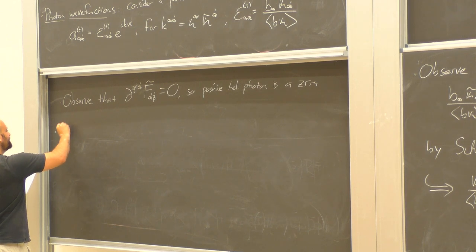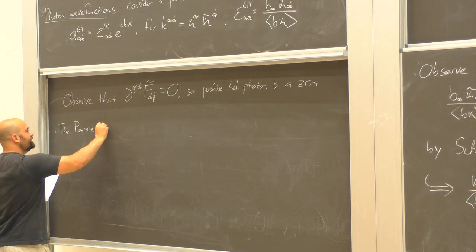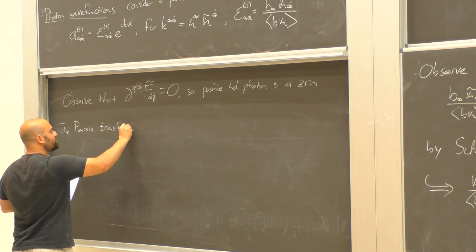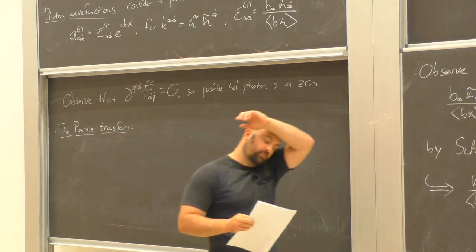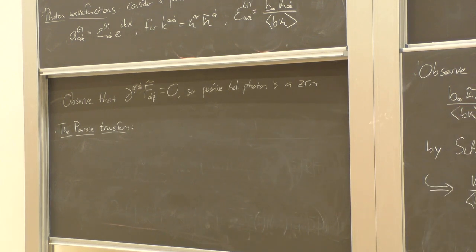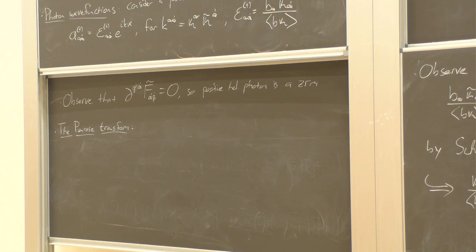Now onto the real money maker: the Penrose transform. To talk about what this is, we need to introduce some terminology. Let curly O(k) be the sheaf of locally holomorphic functions on twistor space, homogeneous of degree k, where k is an integer. Sections — for most intents and purposes you can think of this sheaf as just a line bundle. This is just fancy words for functions on twistor space f(Z), where Z are holomorphic homogeneous coordinates on twistor space, which obey: if you rescale their argument by any non-vanishing complex number, the function scales like that number to the power k.